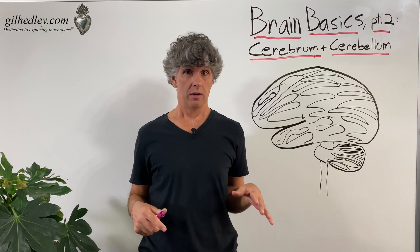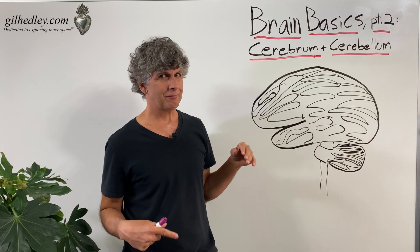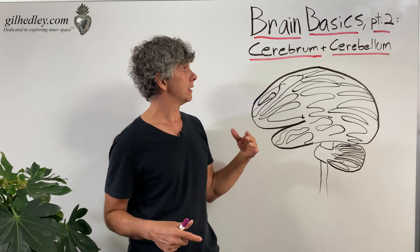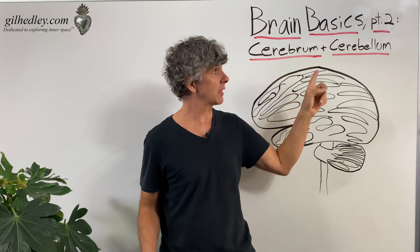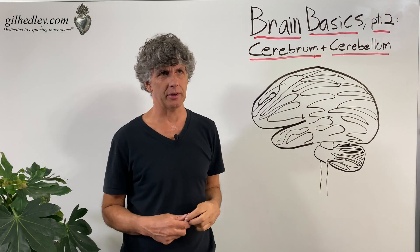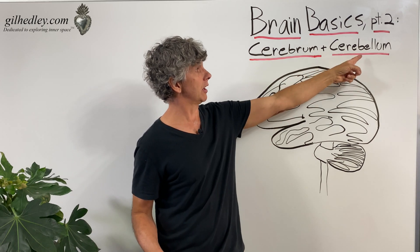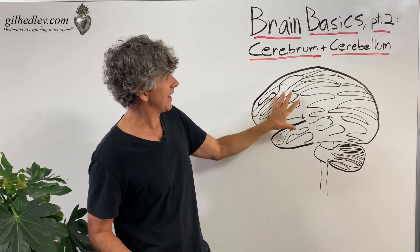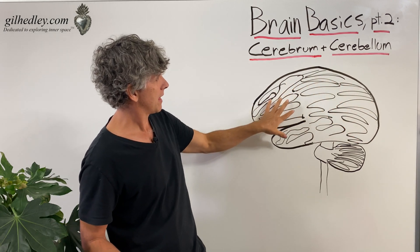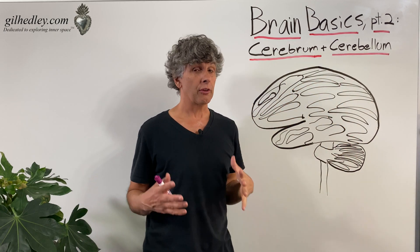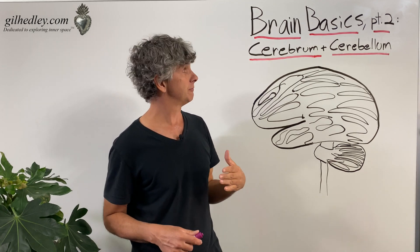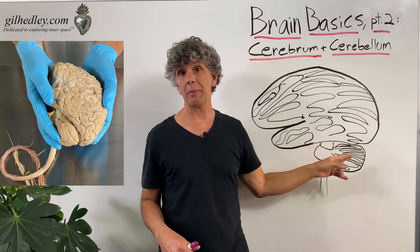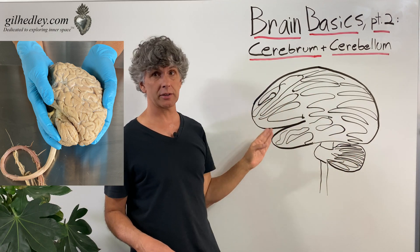Let's continue our discussion of brain basics. You hear a lot of different words referencing the human brain. Two of those words would include the cerebrum and the cerebellum. They're very similar sounding words — basically, the cerebellum is a little version of the cerebrum. This is a very basic drawing of the human brain. Here we have the cerebrum and here we have the cerebellum. The first difference is that the cerebrum is big and the cerebellum is relatively small as compared to the cerebrum.